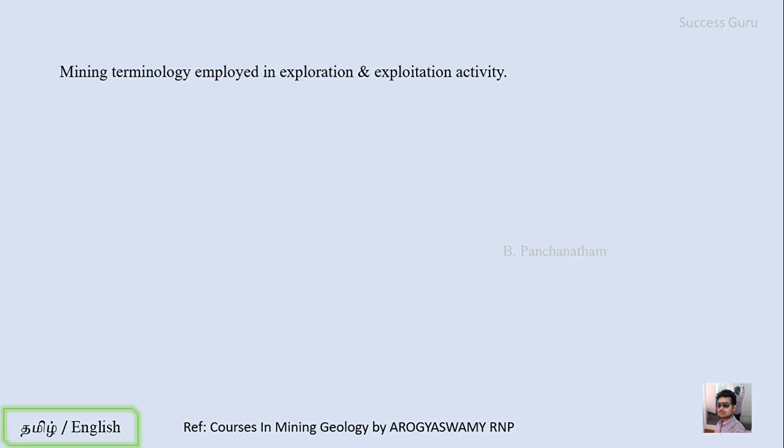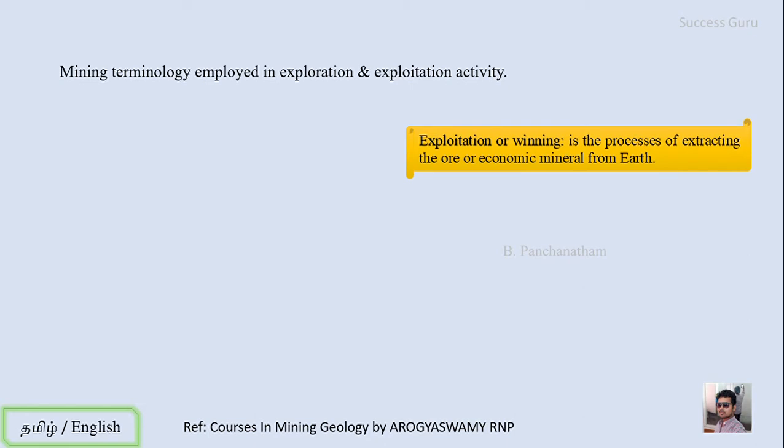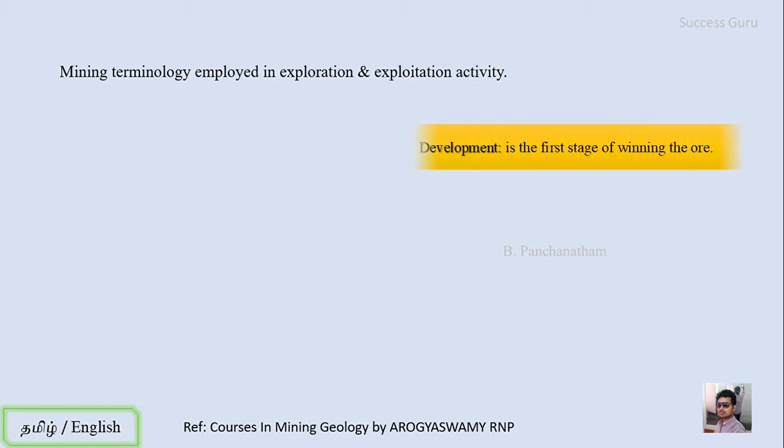Let us see some other terms used in exploration as well as exploitation activities. Exploitation or winning is the process of extracting the ore or economic mineral from the earth — if you find a mineral deposit underground and take it out to the surface and process it, that is called exploitation or winning. The next term is development: the very first stage in identification of a mineral deposit is prospecting and exploration, and after you have found the area and volume of the ore deposit, the very first step in extraction is the development.